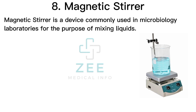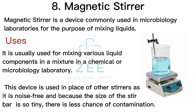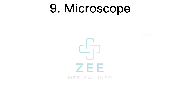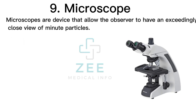A magnetic stirrer is a device commonly used in microbiology laboratories for the purpose of mixing liquids. It is usually used for mixing various liquid components in a mixture in a chemical or microbiology laboratory. This device is used in place of other stirrers as it is noise-free, and because the size of the stir bar is so tiny, there is less chance of contamination.